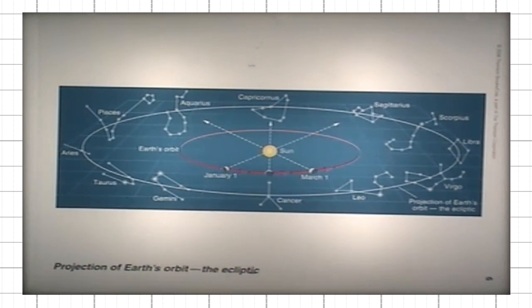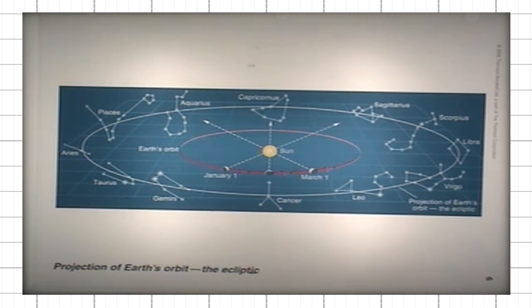Now, to describe the motions of stars and the Sun, we use the concept of the celestial sphere.